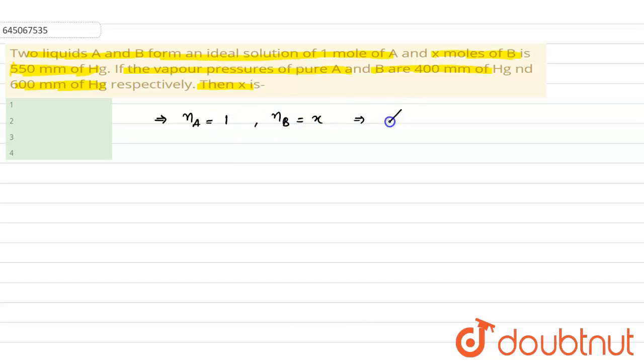From here we can find out mol fraction of A, it would be equal to mol of A divided by total mol 1 plus x. Mol fraction of B in similar way, mol of B upon total mol of solution that is 1 plus x.